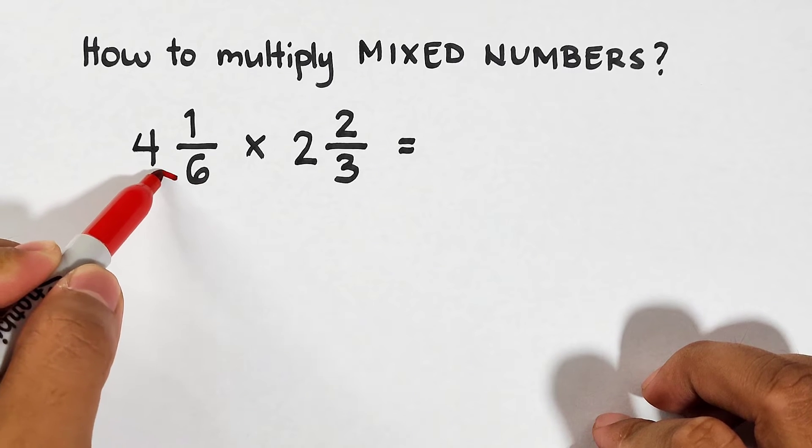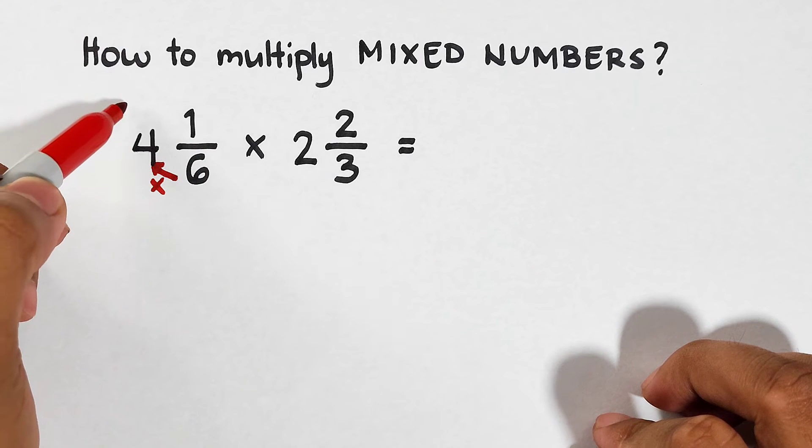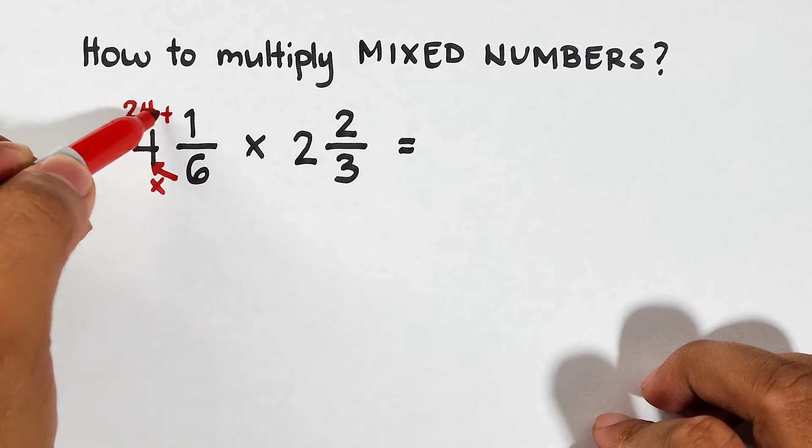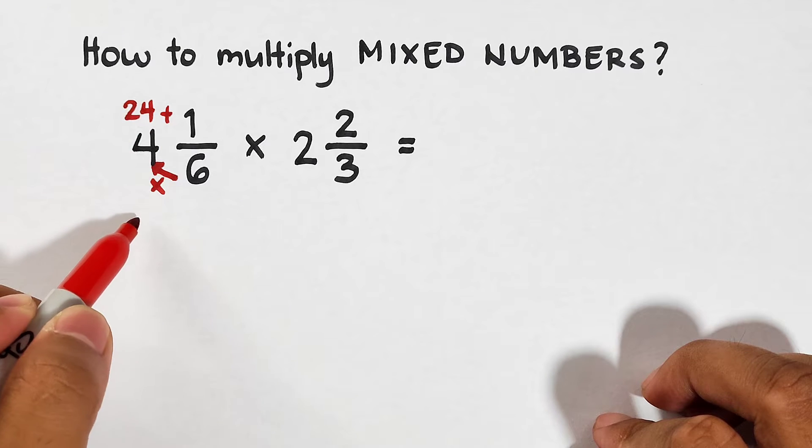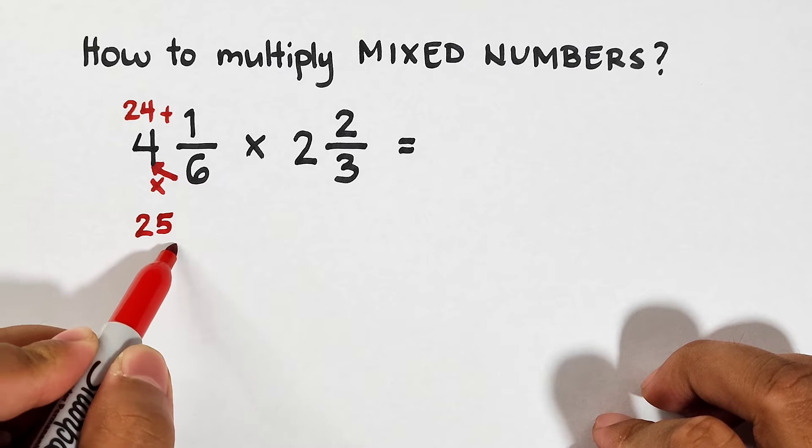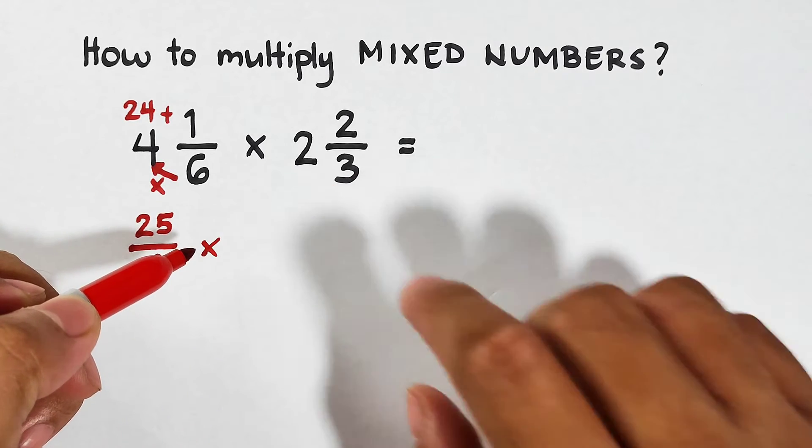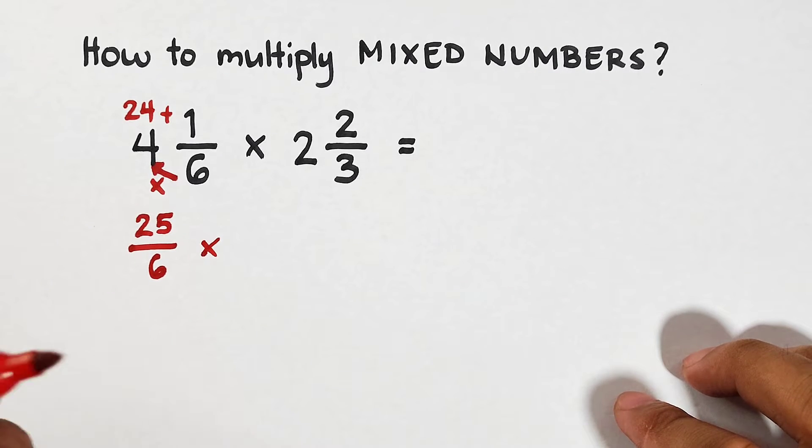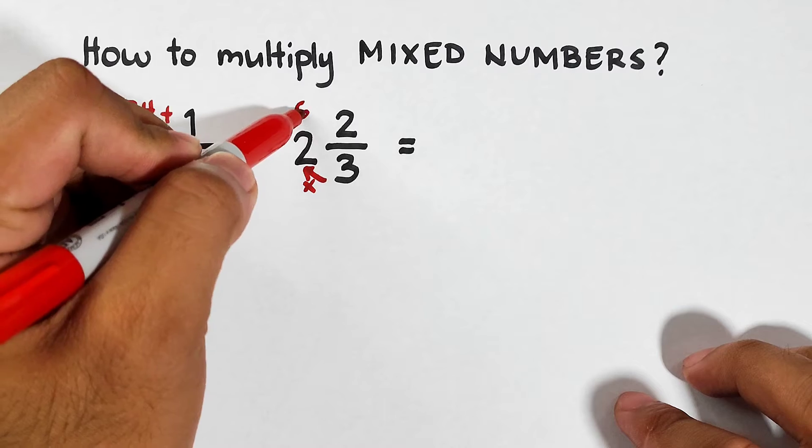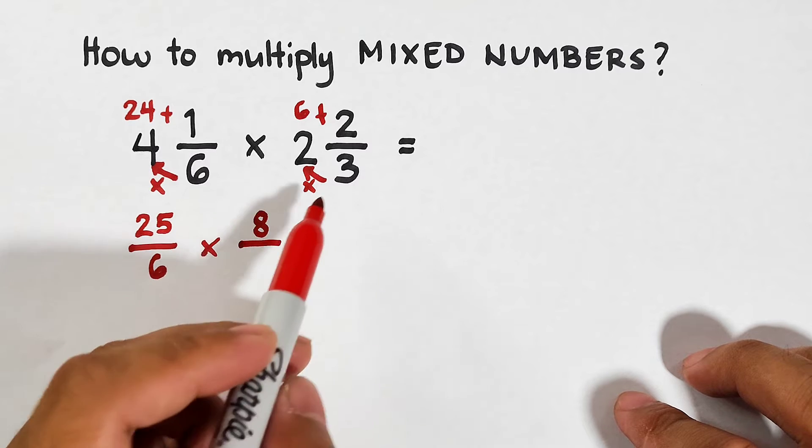So first, multiply the denominator by the whole number. 6 times 4, that is 24. Then add this one and the numerator. We have 24 plus 1, which is equal to 25. Then copy your original denominator, which is 6. Times, convert also this one into improper fraction. 3 times 2, that is equal to 6, and plus 2, that is equal to 8 over, copy your denominator, which is 3.